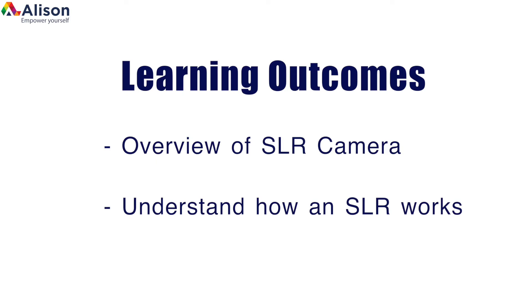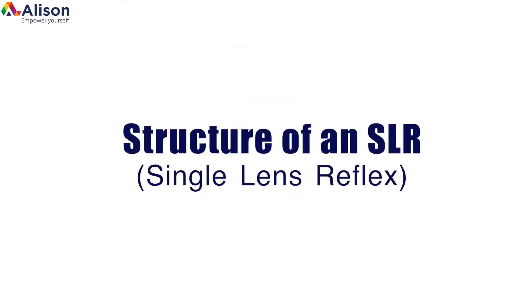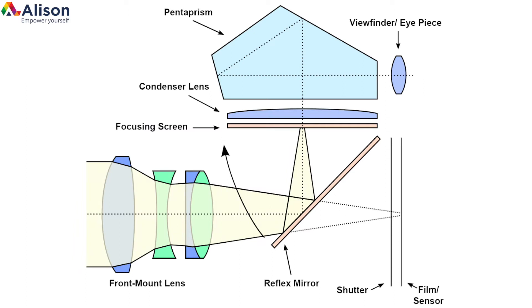By the end of this video you will have a better understanding of the inner workings of an SLR, and you'll also be able to label a diagram of the various parts within a camera. Let us begin by taking a detailed look at the structure of an SLR. The first thing are the lens elements — this is simply an interface, mechanical and often electrical, between a photographic camera body and a lens, where the light enters the camera.